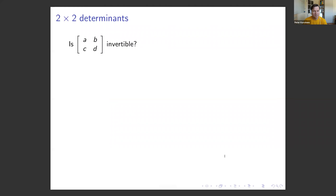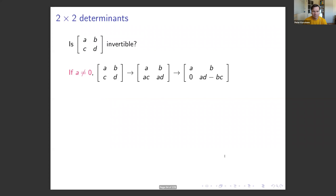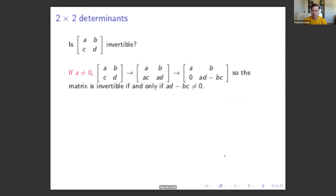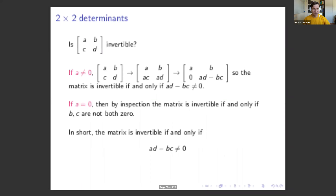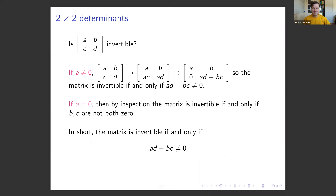Consider the general 2x2 matrix with entries a, b, c, d. When a is not zero, we do row reduction: multiply the second row by a and the first by negative c, then add them to get the matrix with entries ab, 0, ad minus bc. Invertibility holds when ad minus bc is not equal to zero. If a equals zero, we check other entries. In short, the matrix is invertible if and only if ad minus bc is not equal to zero.